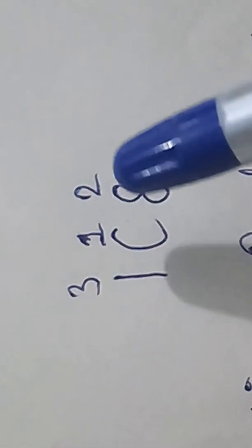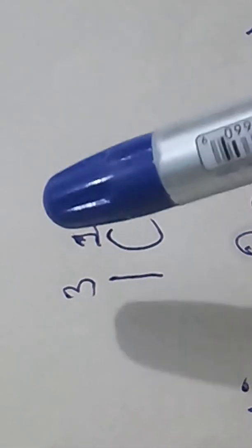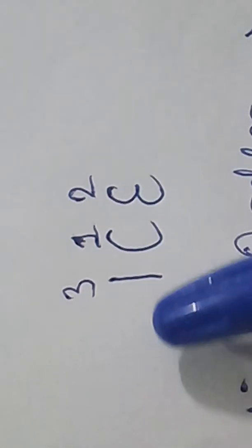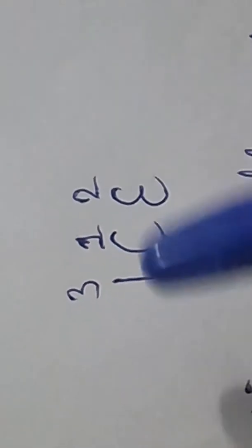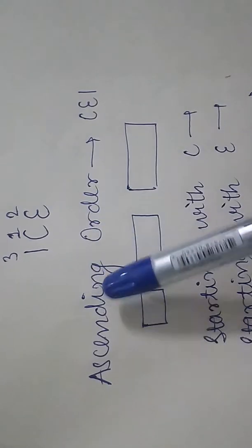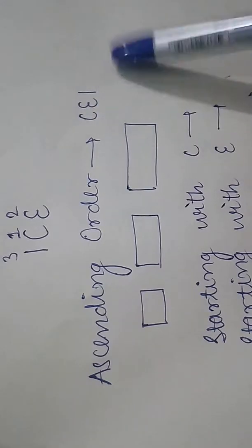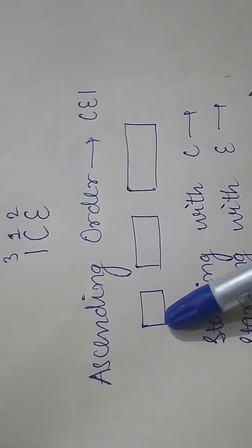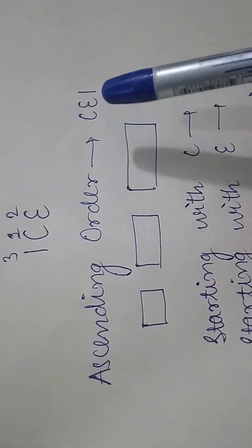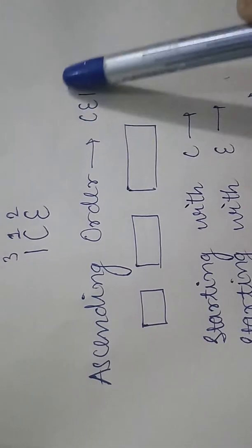So, we arrange the words in ascending order. First, we have C, then we have E, and then we have I. So, our ascending order is C, E, I. And here we have three blocks, which are to be filled with these three letters.